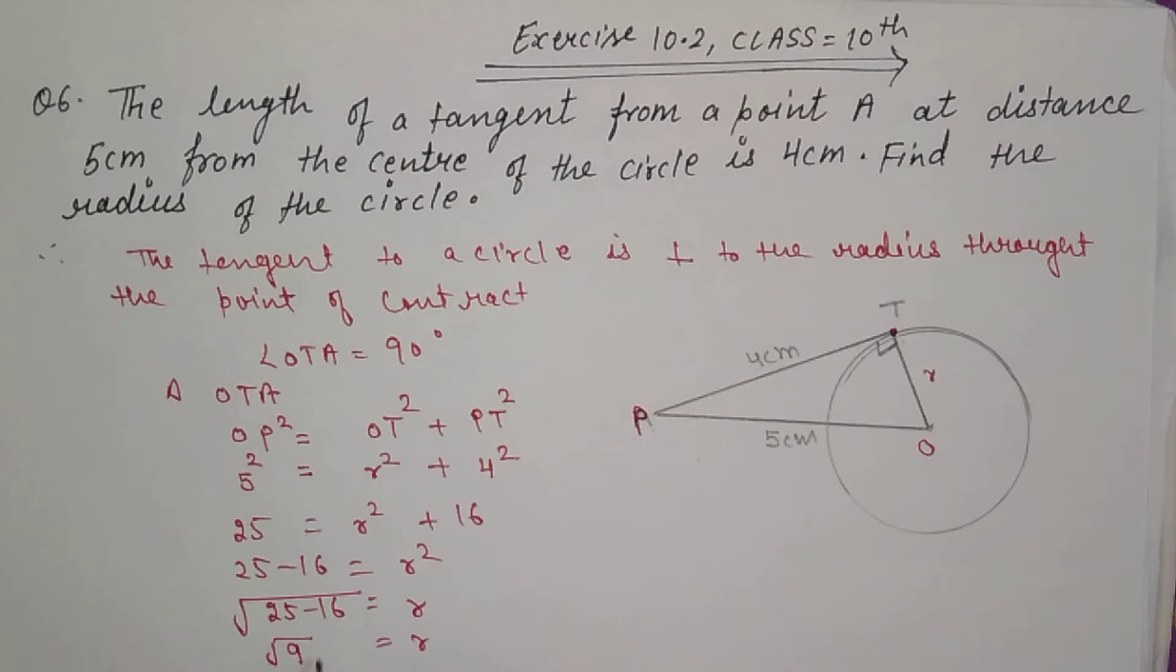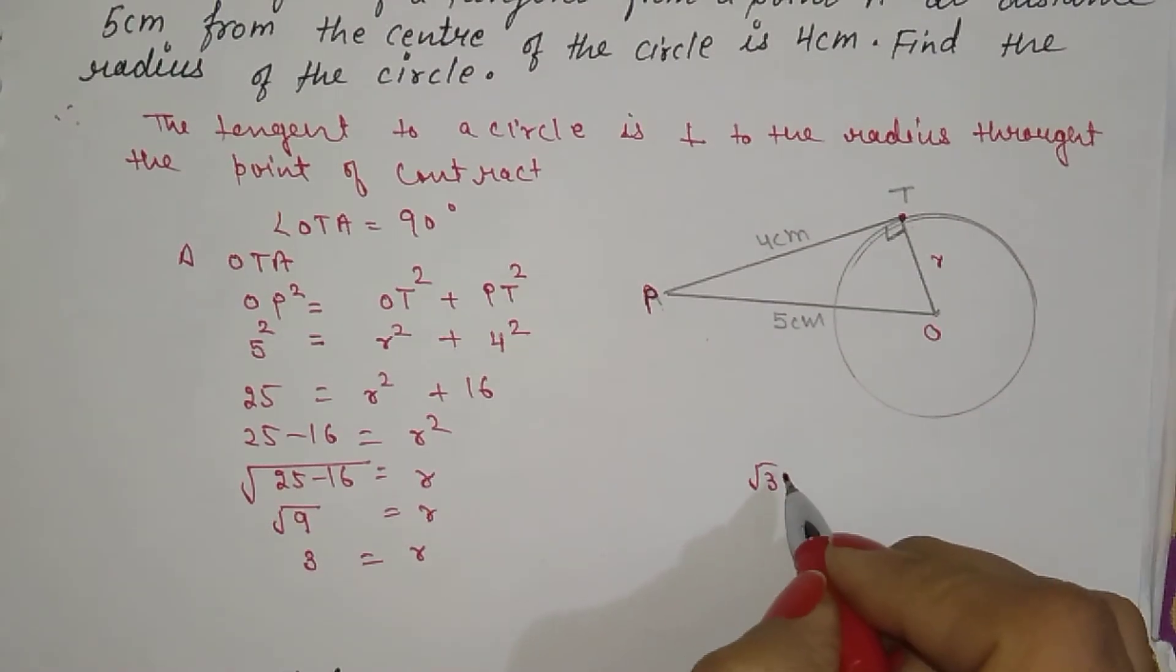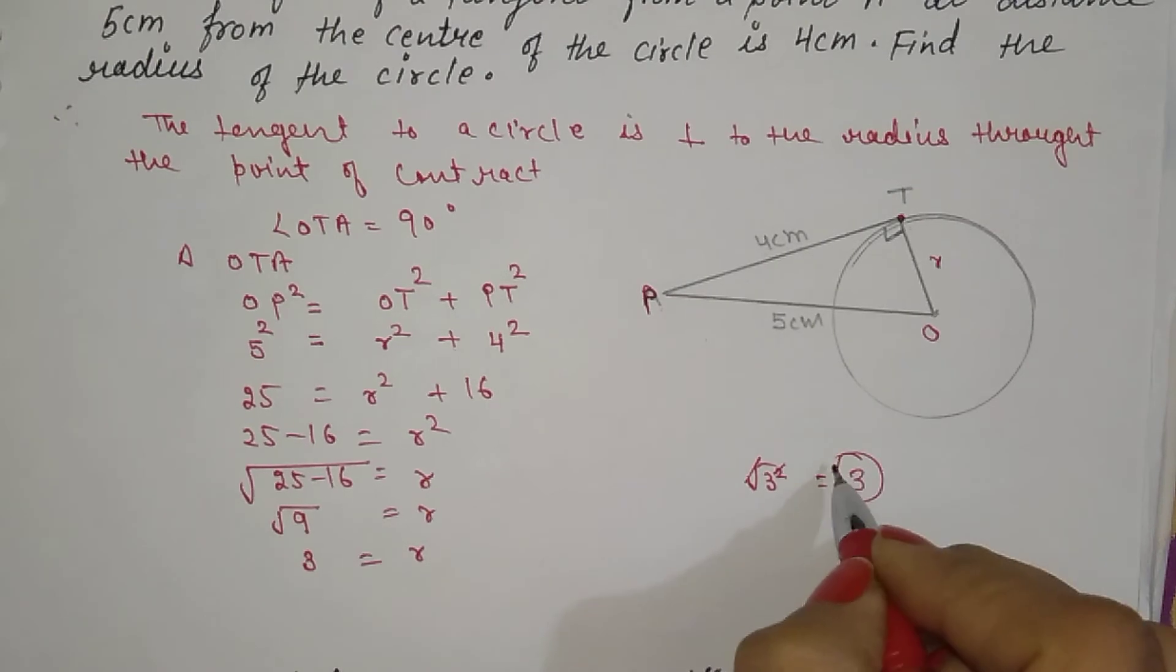If we take square root on both sides, the square and root cancel out, and we get 3.